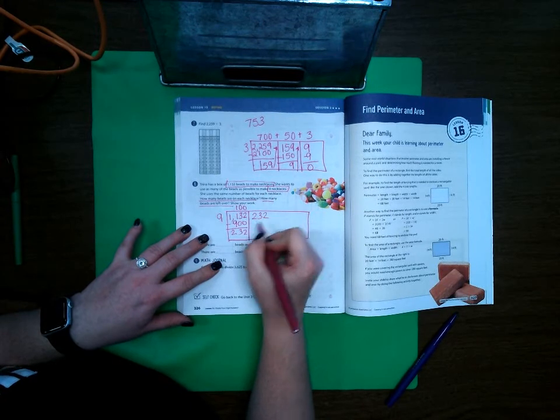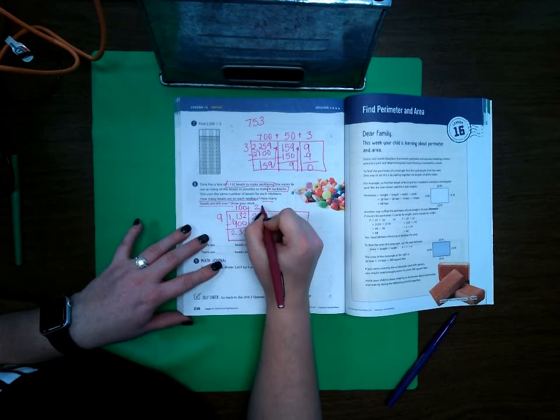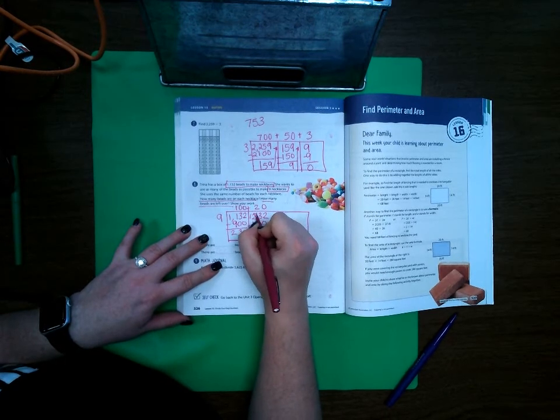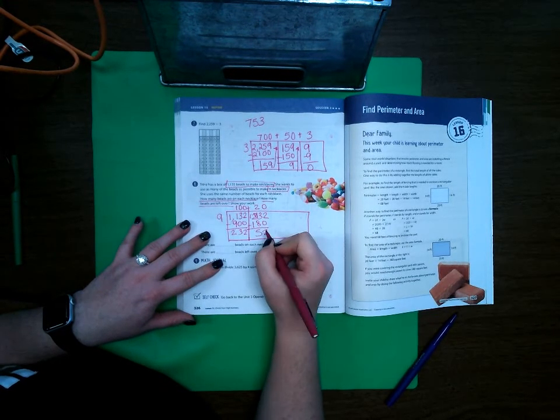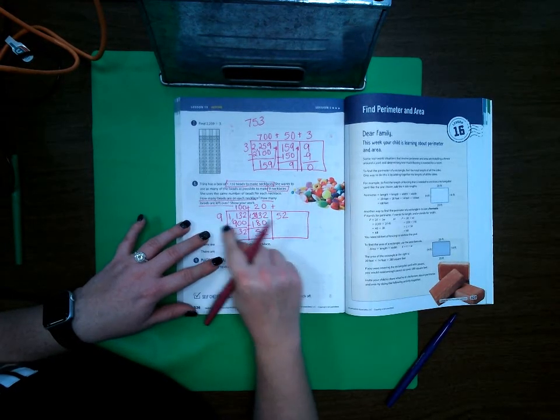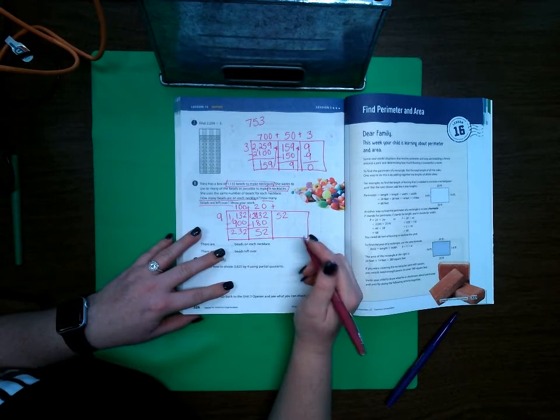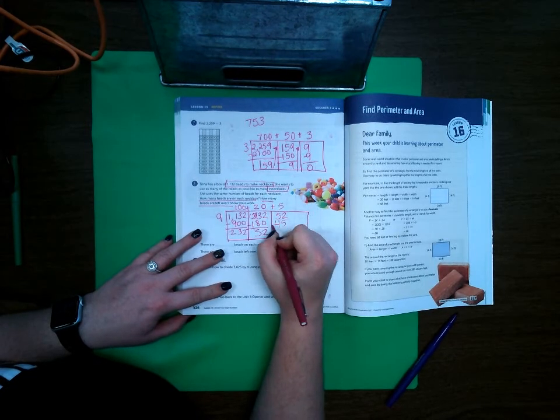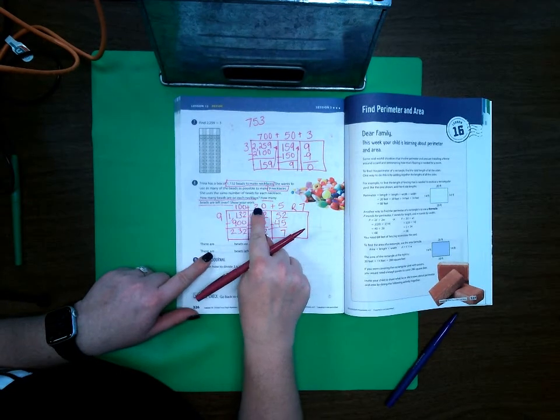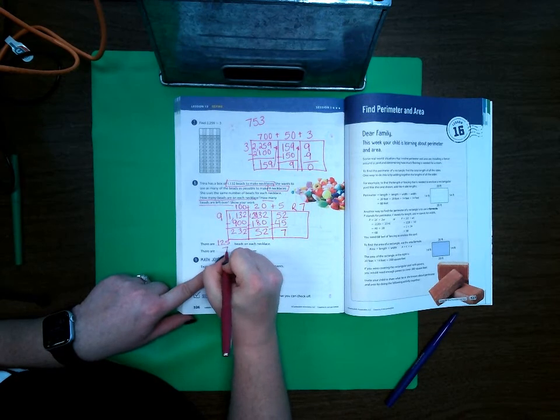9 can't go into 2, but it can go into 23, 2 times. So 9 times 20 is 180. 9 times what gets as close to 52 as possible without going over? Well, 9 times 5 is 45. Subtract, and there's 7. So 100 plus 20 plus 5 is 125 beads in each necklace, and there are 7 beads left over.